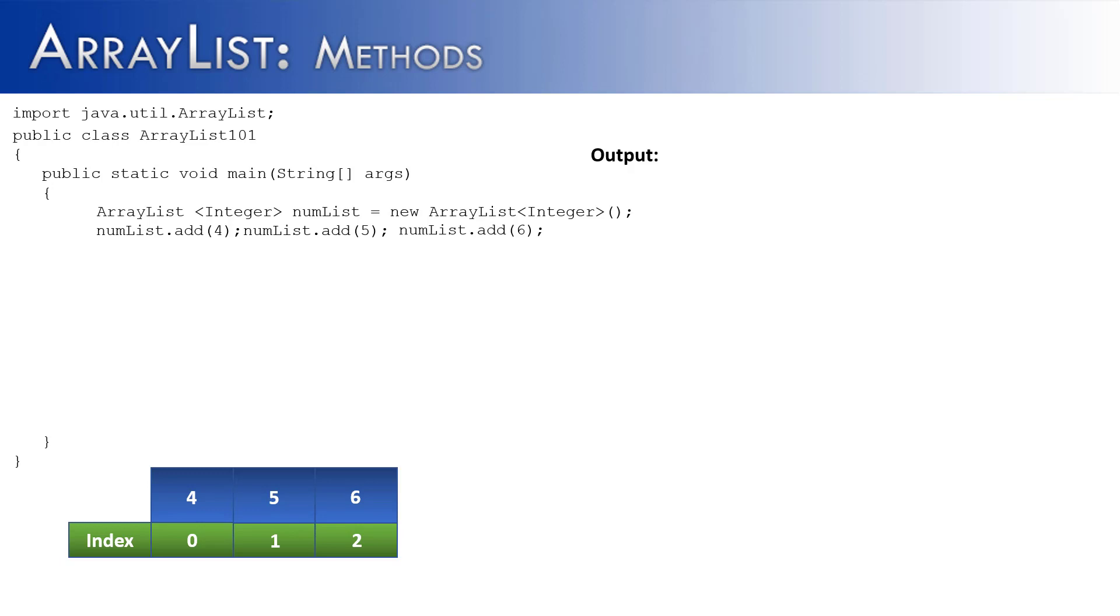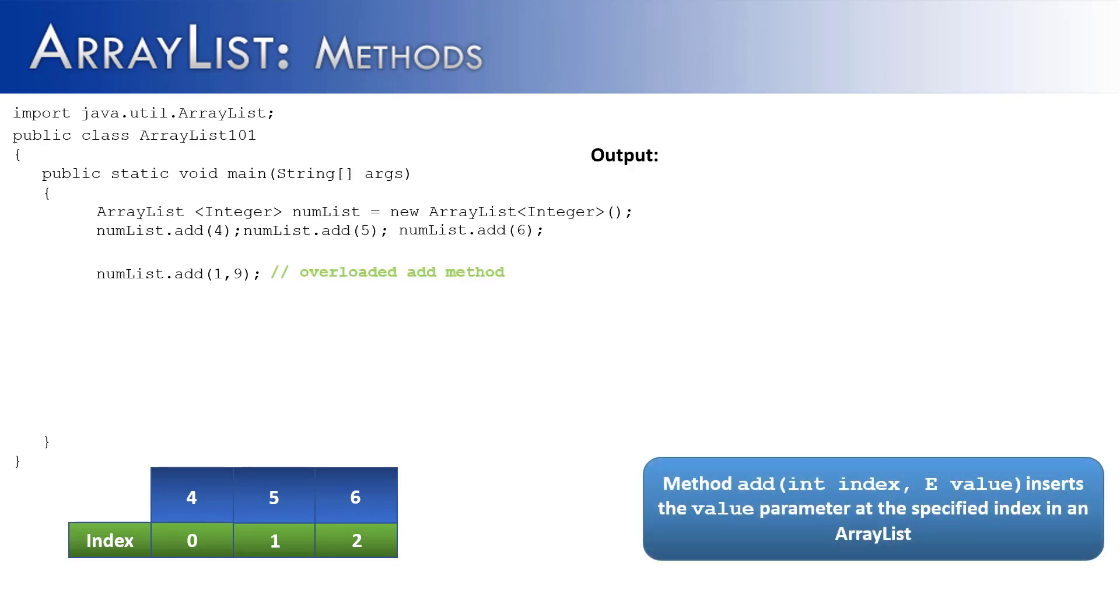The method that I want to show in this example is also called add, but there's a slight difference. You can see that this add method is overloaded because instead of just having one parameter, it has two parameters. And the first parameter is the index, where you want to add the element, and the second parameter is the value. That's the value that's going to be inserted into the ArrayList.